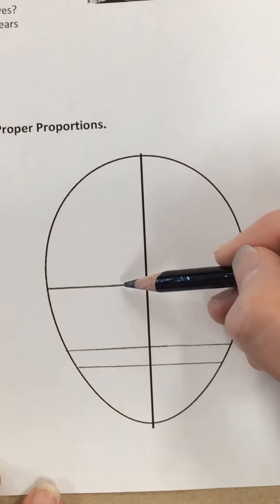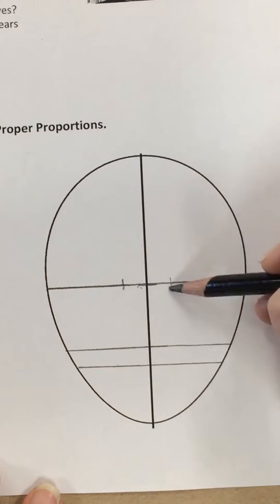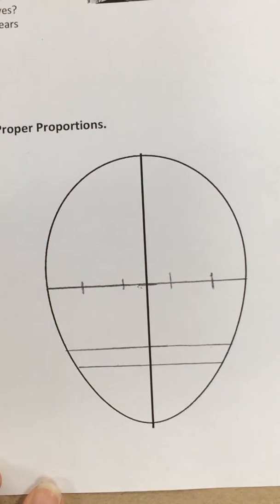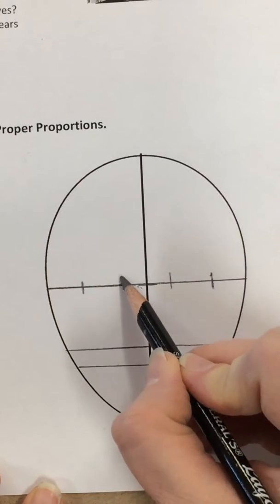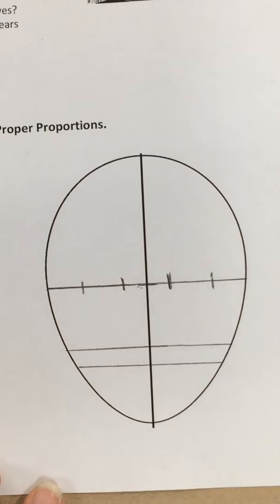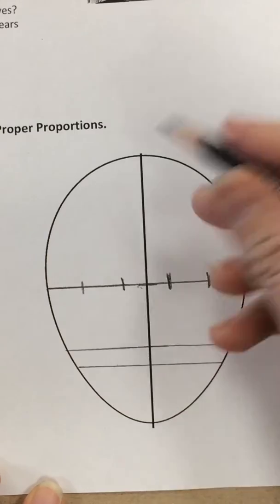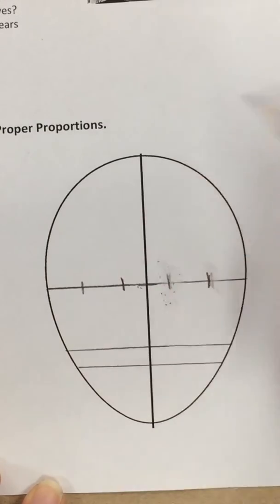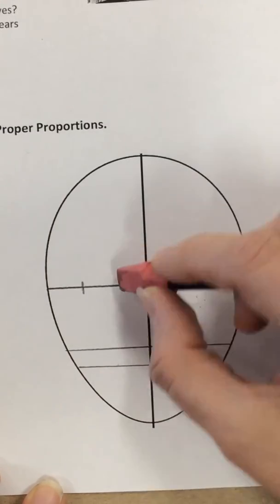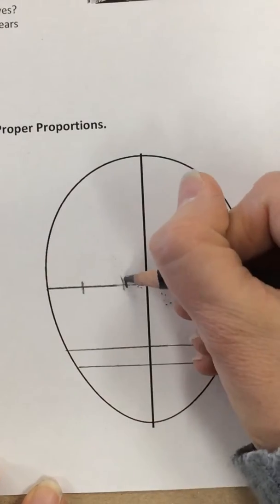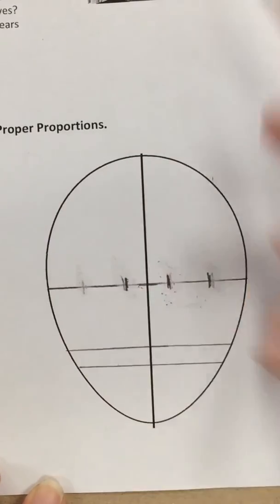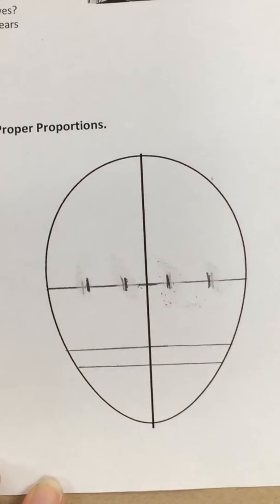We're going to divide this into five equal places so we can place the eyes. We can always mess with it a little bit and fudge it if we went a little too wide or too far apart, until it's the right width.